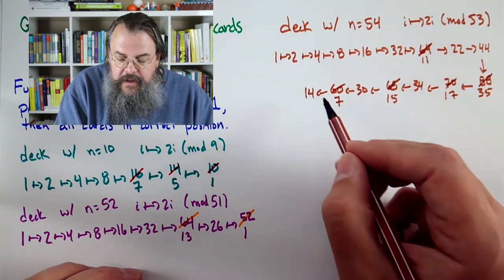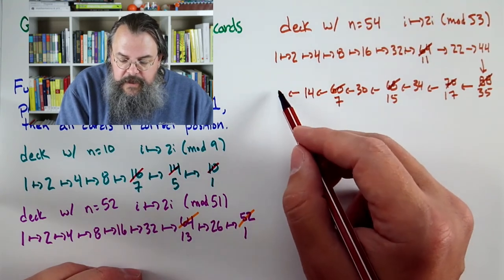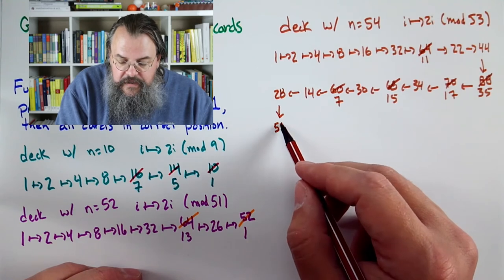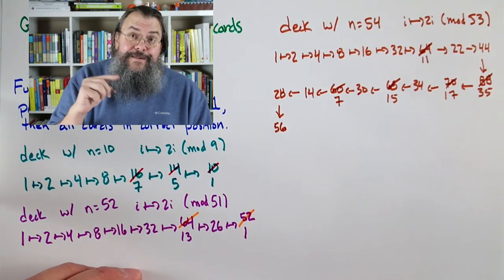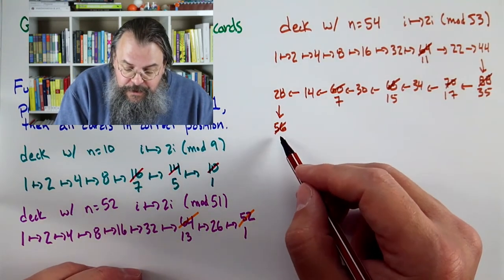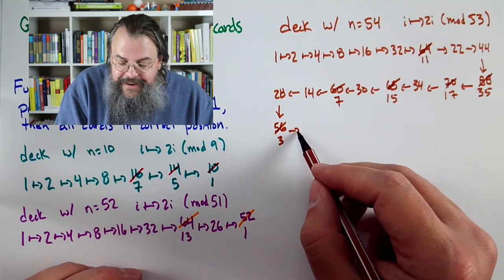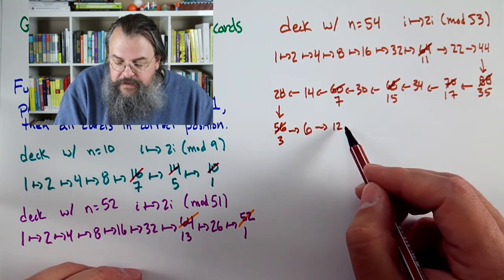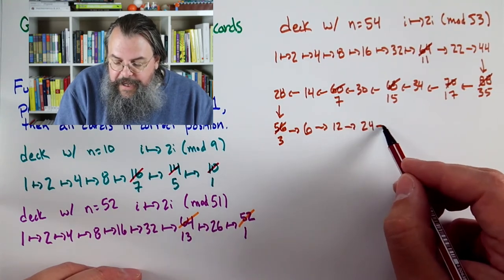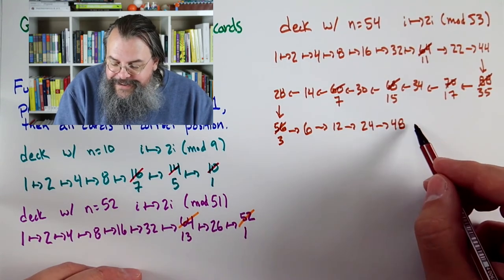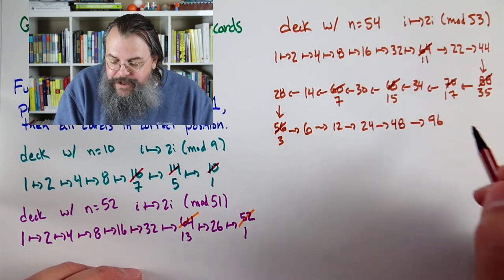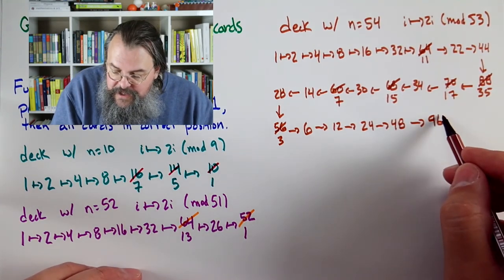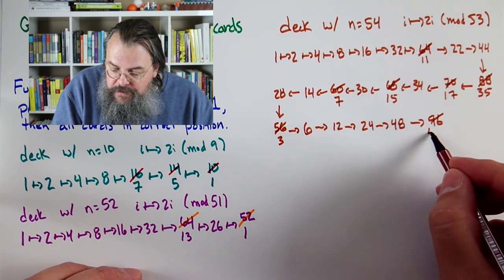And that we double, that goes to 10. Well that's too big, subtract 9. And what do we end up with? We get 1. We're back to 1. So how many shuffles did we need? 1, 2, 3, 4, 5, 6. So for 10 cards it takes 6 shuffles. Well that's kind of a big number for 10, right? For 52 it took 8. Let's talk about 52.